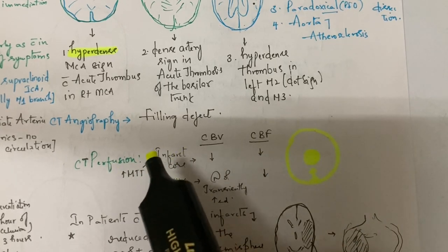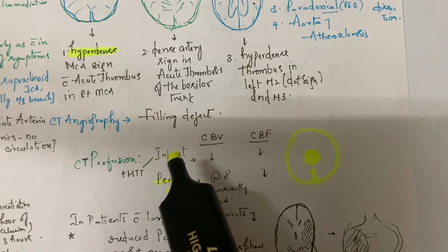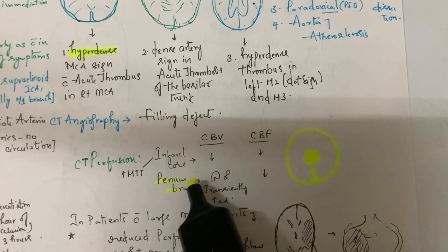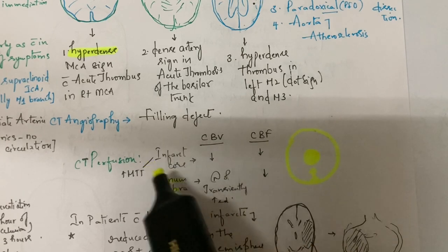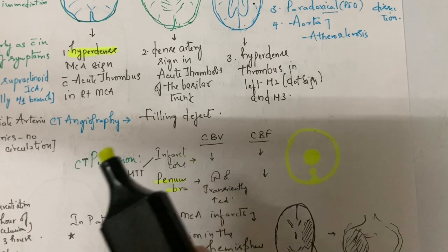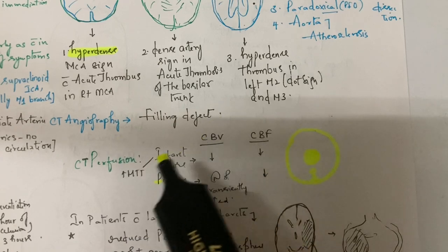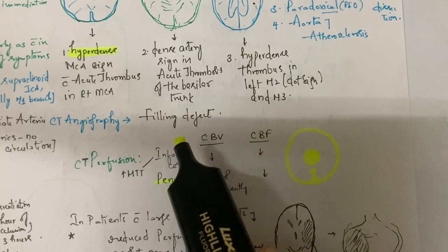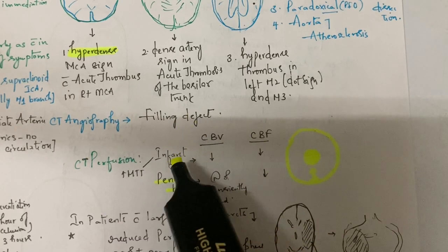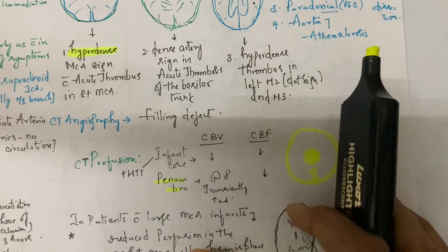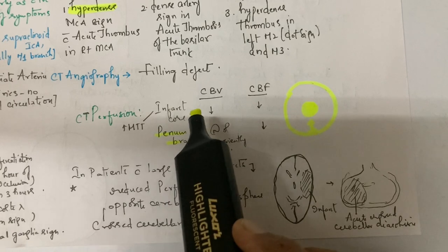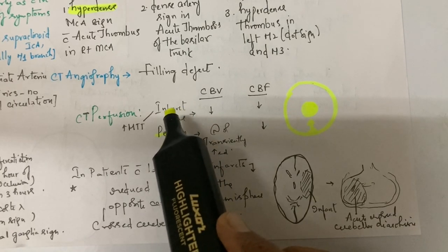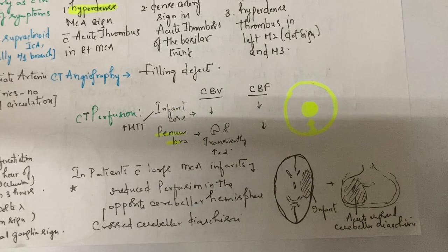What is the importance? It's useful in endovascular treatment for patient selection. Patients with large penumbra and small infarct core are selected. If the patient has a large infarct core and we do endovascular treatment, the chance of hemorrhagic transformation is more. So we select patients with small infarct core and large penumbra.